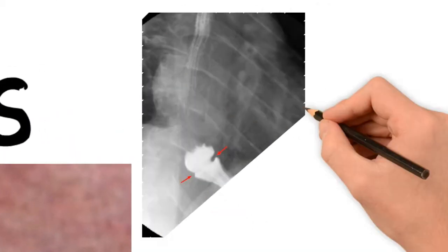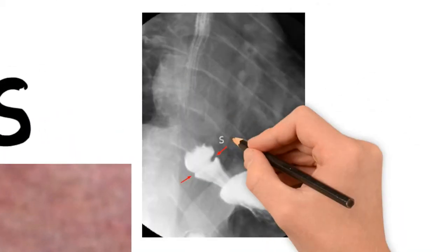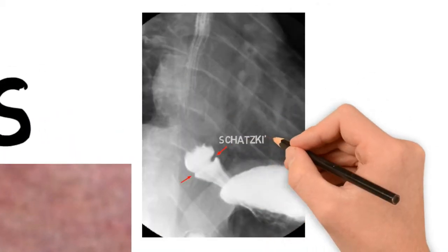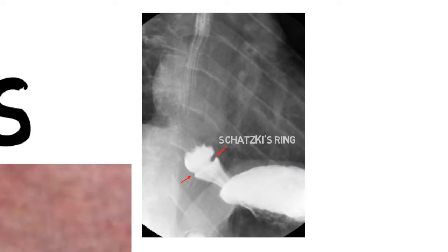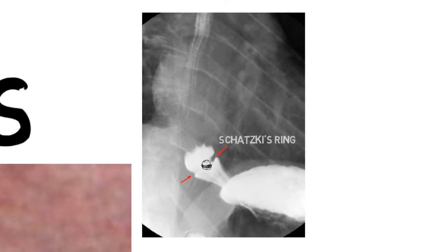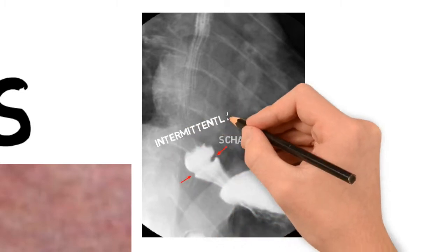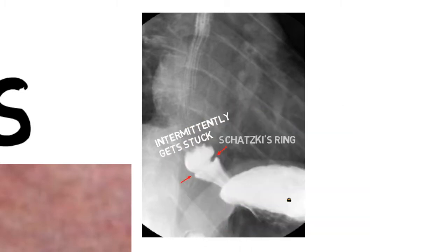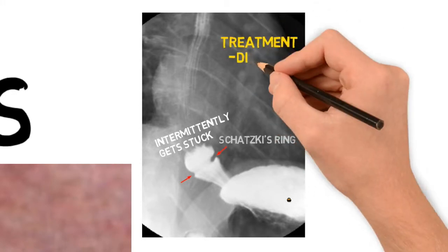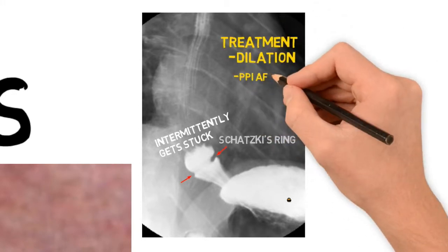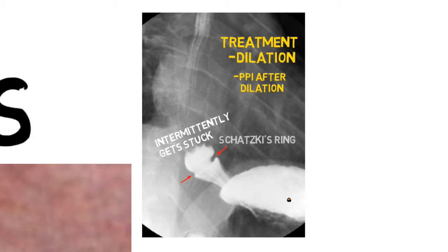Looking at a Schatzky's ring on an upper GI, the patient swallows a hamburger and sometimes — but not always — it intermittently gets stuck on the Schatzky's ring, then eventually makes its way down. This is why we're looking for intermittent dysphagia as an indicator of Schatzky's ring. Treatment is dilation and PPIs after dilation, because it's theorized that acid may be causing the Schatzky's ring.